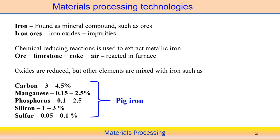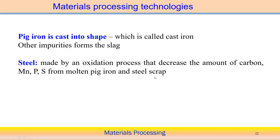The iron ore, along with limestone, coke, and air, is allowed to react in a furnace such that the oxides are reduced and impurities can be removed. In certain cases, some elements can also be mixed with the iron, converting it to pig iron. Pig iron is a more usable form of iron, and is the first step from iron ore. Pig iron contains carbon 3 to 4.5%, manganese 0.15 to 2.5%, phosphorus 0.12 to 2.5%, and silicon and sulfur.